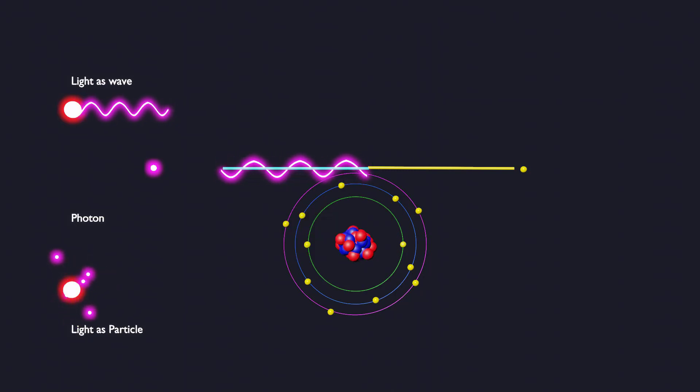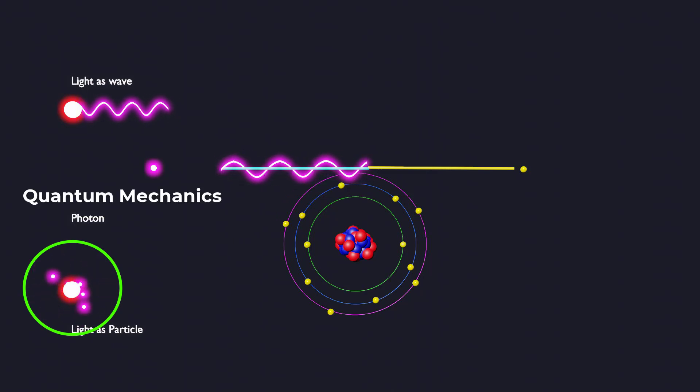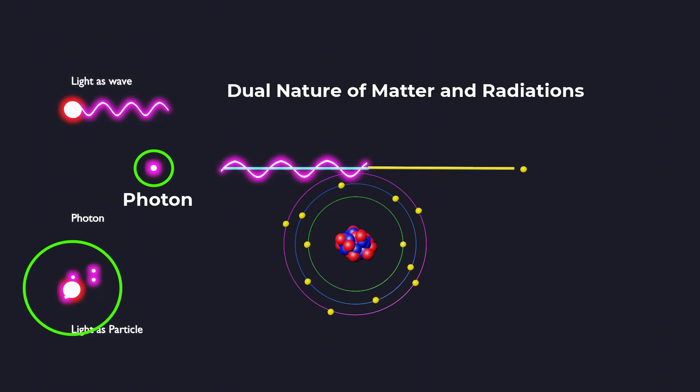The Compton Effect played a significant role in confirming the particle-like behavior of light and supporting the development of quantum mechanics. It provided experimental evidence that light behaves as particles called photons, contributing to our understanding of the dual nature of matter and radiation.